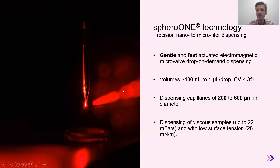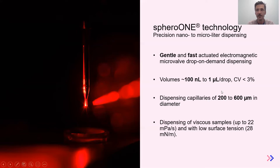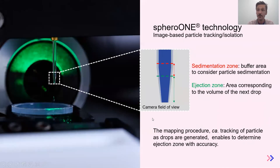Because we want to dispense large cellular aggregates, the capillary we use has an enlarged aperture compared to the standard, with diameters ranging from 200 to 600 micrometers. Just like the standard system, our capillary is placed in front of a camera, which is asked to take a picture before every single drop we generate.